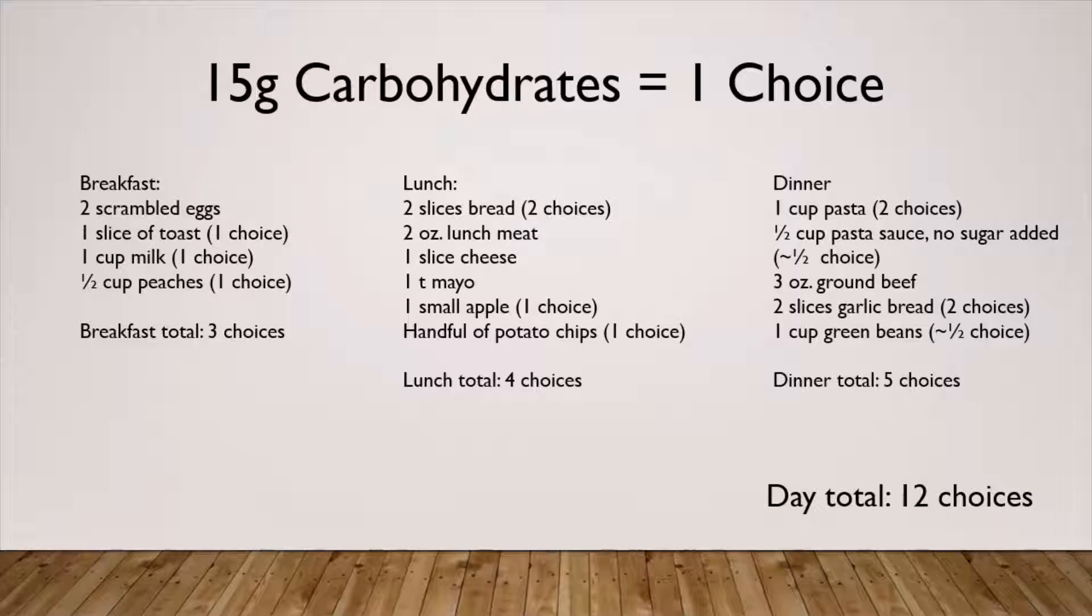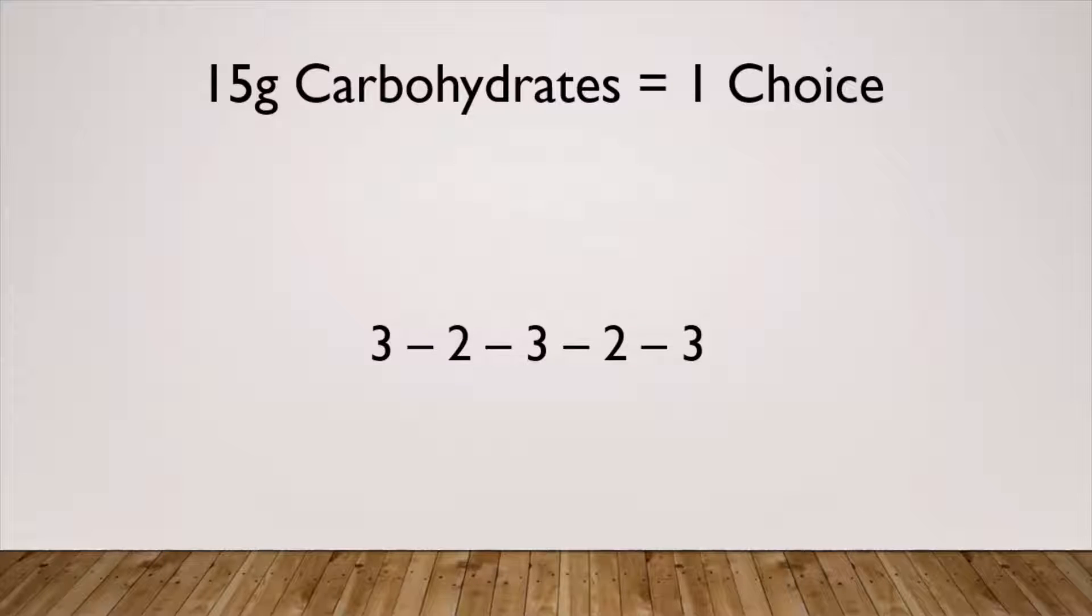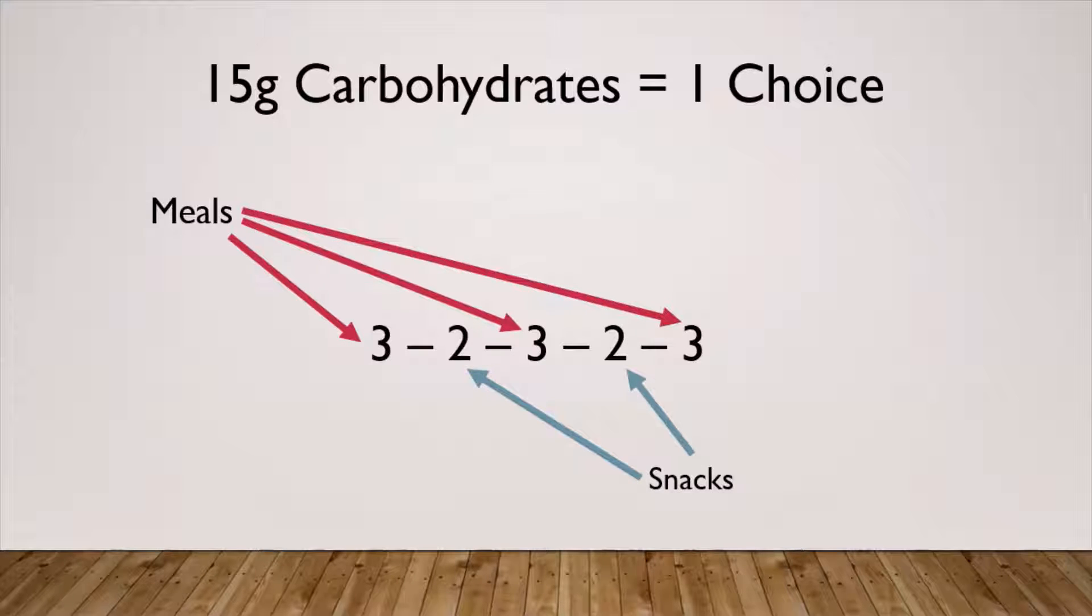The goal with diabetes is distribution. An average daily intake of carbohydrates should be evenly spread across the day. An example might be 3-2-3-2-3, with the threes being meals and twos being snacks. But like everything else, we can encourage and educate all day, but if they don't want to do what we're telling them, of course we can't force them. We're here for patient care first and foremost.